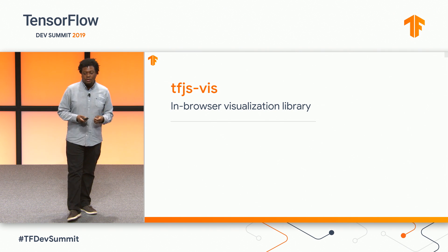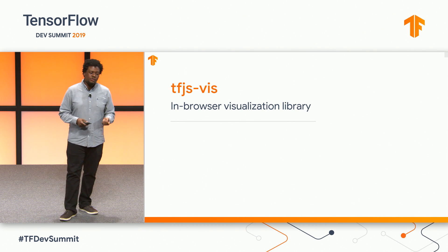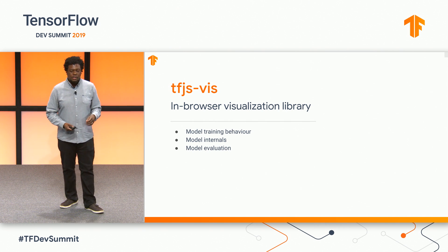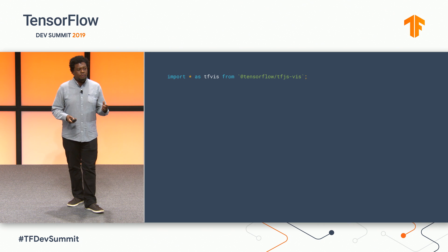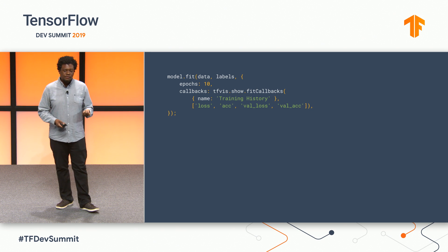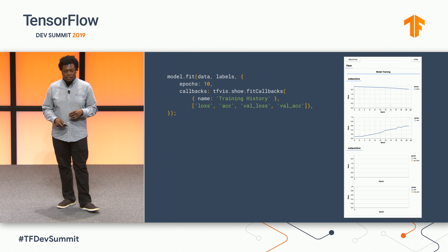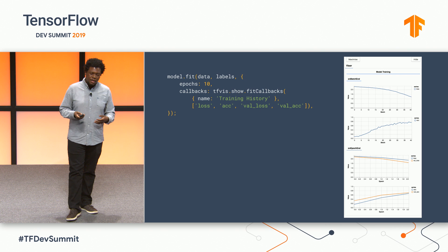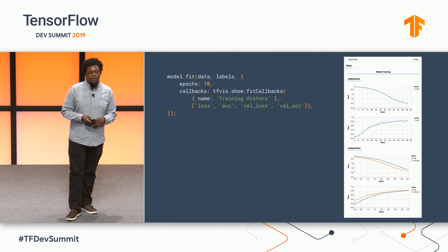The other area we've been responding to community feedback is visualization. The first thing I want to talk about is TFJS Viz, a library for in-browser visualization of model behavior. With it, you can view training behavior, model internals, and evaluation metrics. We import the library as a separate package. To visualize training behavior, we use the show.fitCallbacks function, specifying a named drawing area and the metrics we want to see. In one line, show.fitCallbacks will plot our selected metrics — in this case, loss and accuracy — on batch end and at the end of each epoch, letting us view how the model is converging live in the browser and adjust hyperparameters.